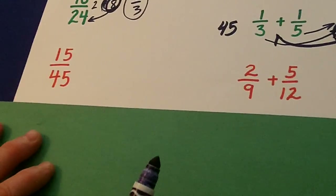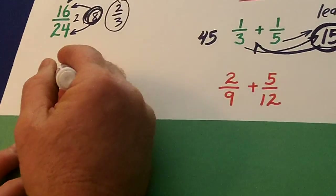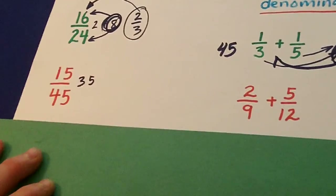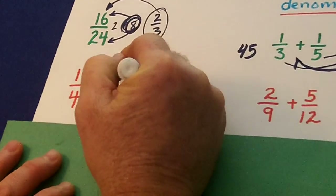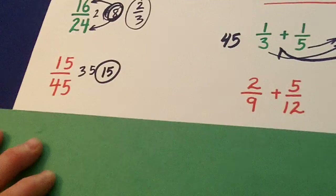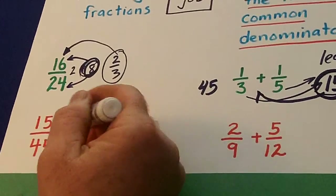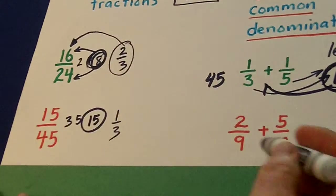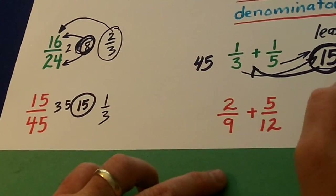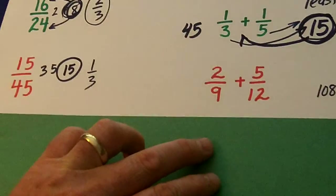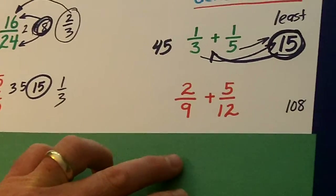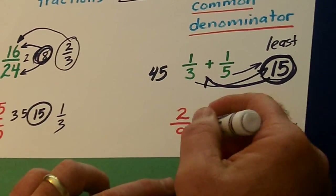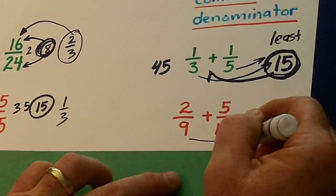Let's look at 15 and 45. 3 goes into those, so does 5, but 15 is the greatest common divisor. And if 15 goes into those two, we get 1 third. Now, 9 times 12 is 108 — but is that the smallest number? Is that the least common multiple that these two can be divided into?